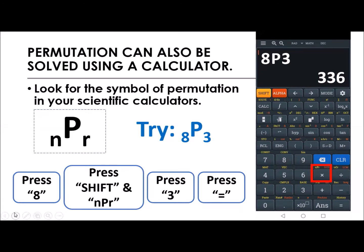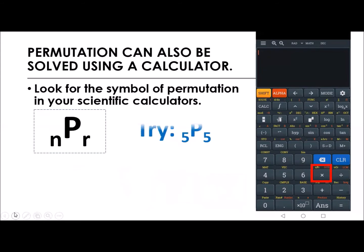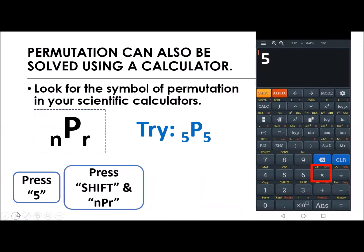Let's try another one. Let's try the next example a while ago, which is the permutation of 5 taken by 5. Press again 5, and then shift and NPR simultaneously. Then press 5 again. Equal sign. So the answer here is 120.